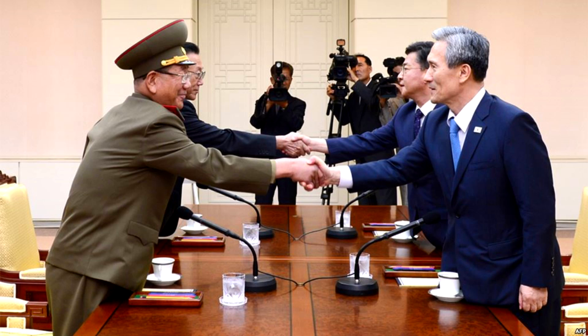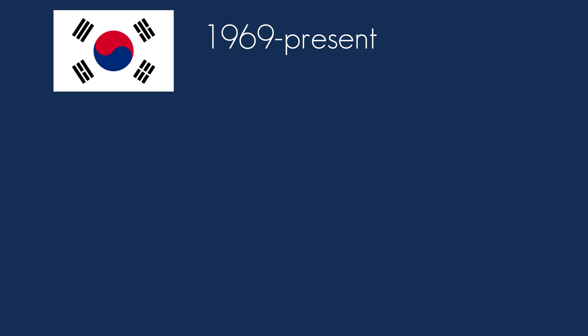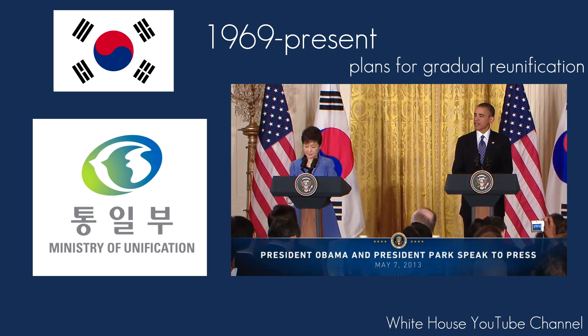The first factor is the means by which the unification comes about. Since 1969, the South Korean government has maintained a Ministry of Unification, which plans for the scenario of a gradual reuniting of the two countries. Indeed, most reunification plans are premised in gradual integration over time.